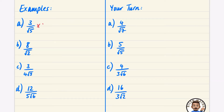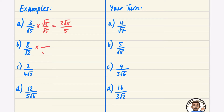For the first fraction, multiply by root five over root five. The numerator becomes three root five and the denominator becomes five. You could write this as three-fifths root five, but the most common form is three root five over five. For the next one, multiply by root two over root two — you're timesing by one so the size doesn't change. You get eight root two divided by two. Since eight divided by two is four, this simplifies to four root two. So eight divided by root two equals four root two.